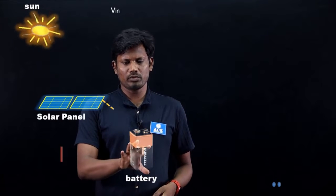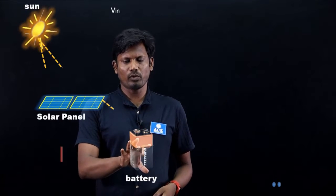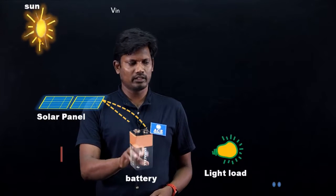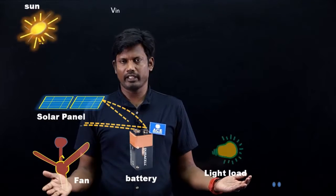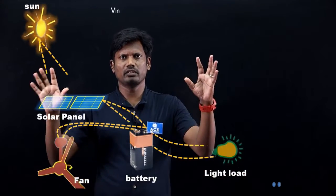The stored DC power would be converted into AC using inverters and connected to various devices like a bulb and fan, as shown in the figure.